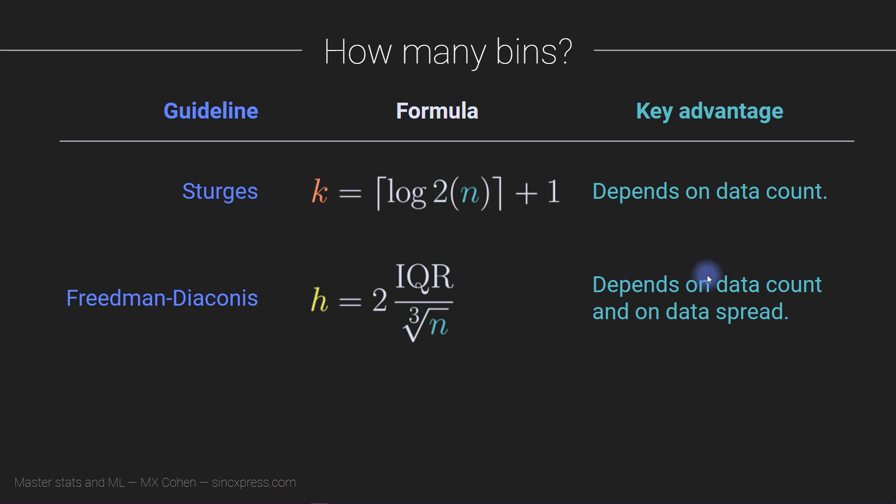So the FD rule is pretty interesting because it depends both on the data count and on the data spread. And then finally, actually this is not really finally, these are just the three that I'm going to discuss here because these are the three most commonly used guidelines. If you look up online, you'll probably find there must be like half a dozen or maybe 10 of these different recommendations for how to choose the number of bins. So anyway, this third one is just arbitrarily choose some number of bins that seems appropriate to you for that particular data set, and generally somewhere around 30, 40, 50. That tends to be a pretty good number.